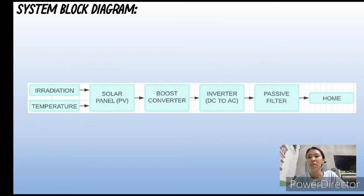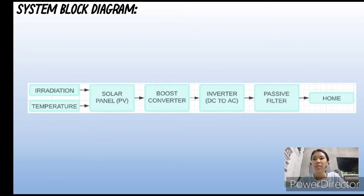The system needs a constant supply for the home, so a boost converter is connected because the solar panel is not getting the exact voltage required for the grid or load due to varying atmospheric temperature from morning to evening and cloudy days. An inverter is connected to convert DC to AC since the solar panel output is DC and the home needs 240 volts AC. The converter is connected to a passive filter to convert pulsating AC to pure AC, then it is received by the home.